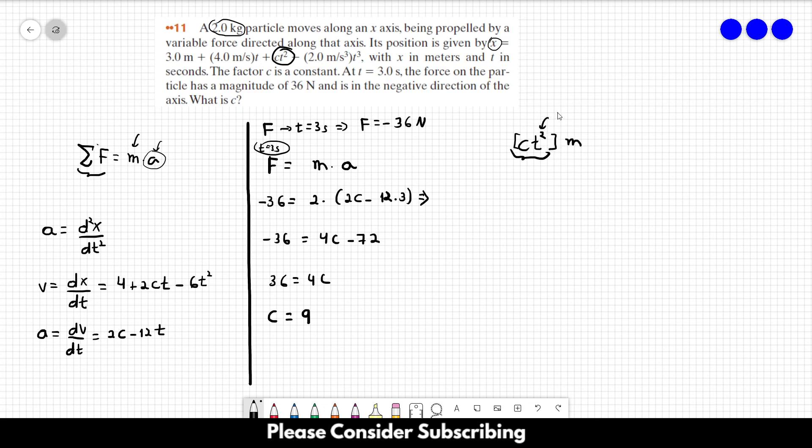And this is seconds, right? So seconds squared. So c, the unit of c, should be meters per second squared. So this term gives us meters. So c is equal to 9 meters per second squared. And that's the answer of the exercise.